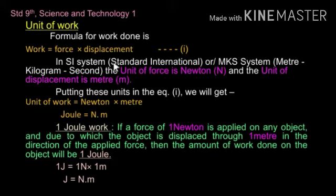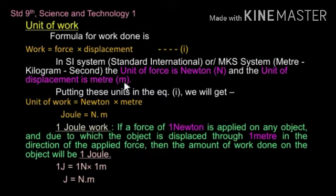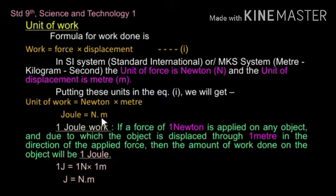In the SI system, also known as the MKS system — which stands for meter, kilogram, and second — the unit of force is Newton (abbreviated as N) and the unit of displacement is meter (abbreviated as m). Putting these units into equation number 1, we get: unit of work = Newton × meter = Newton meter, and this Newton meter is equal to Joule.